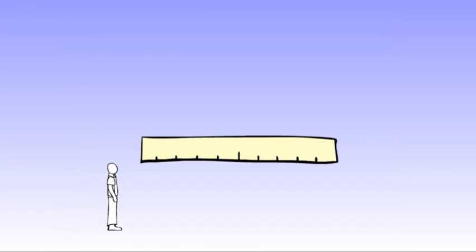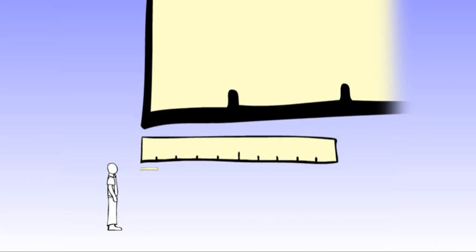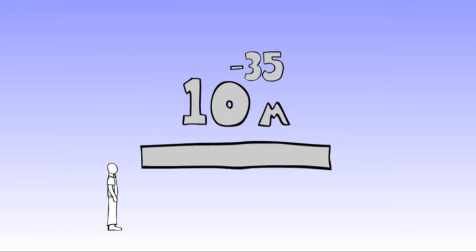You're all good to keep dividing down from meters to centimeters to millimeters to nanometers to attometers. But once you get down to lengths of around 10 to the negative 35th meters, you start to run into problems.